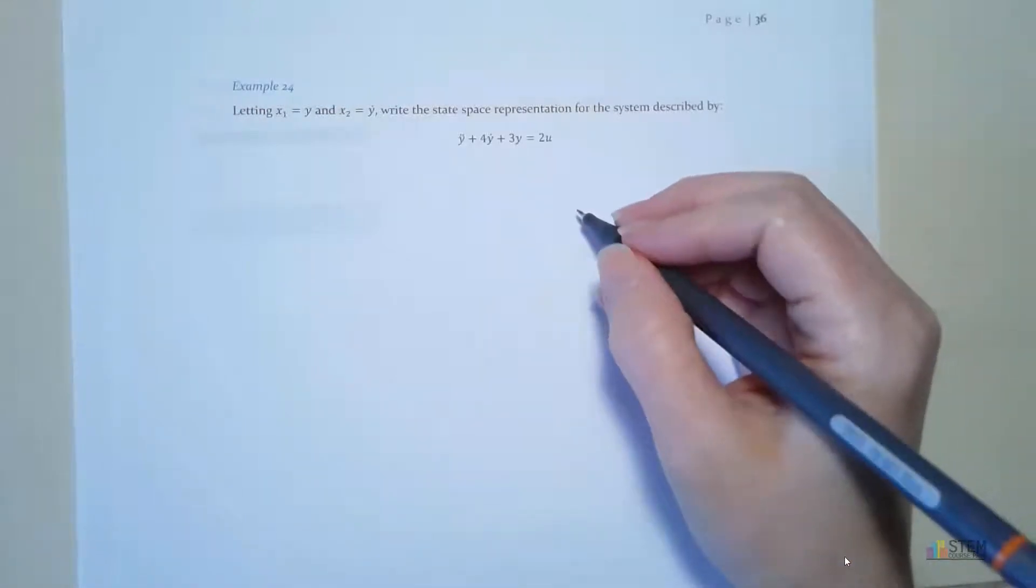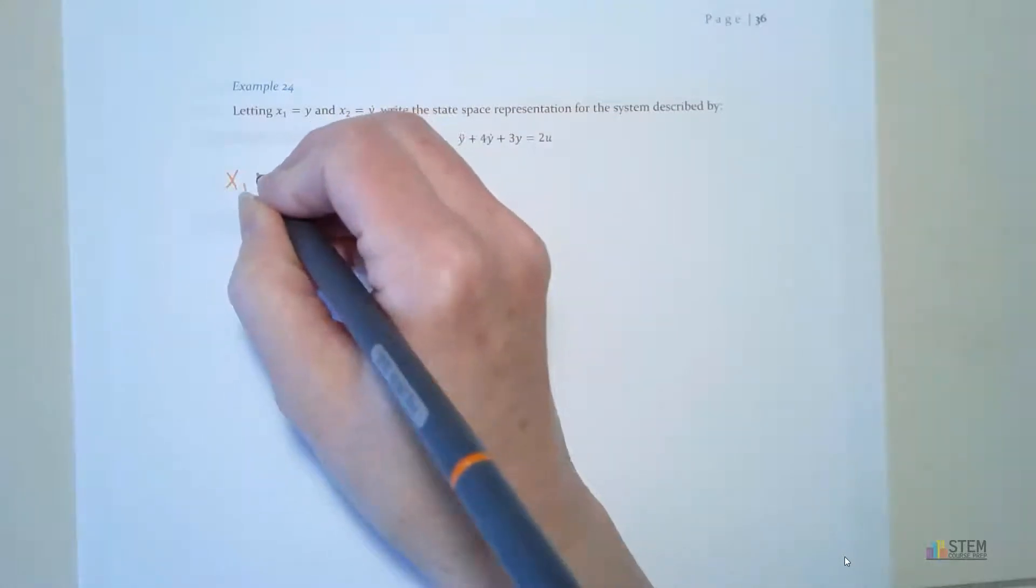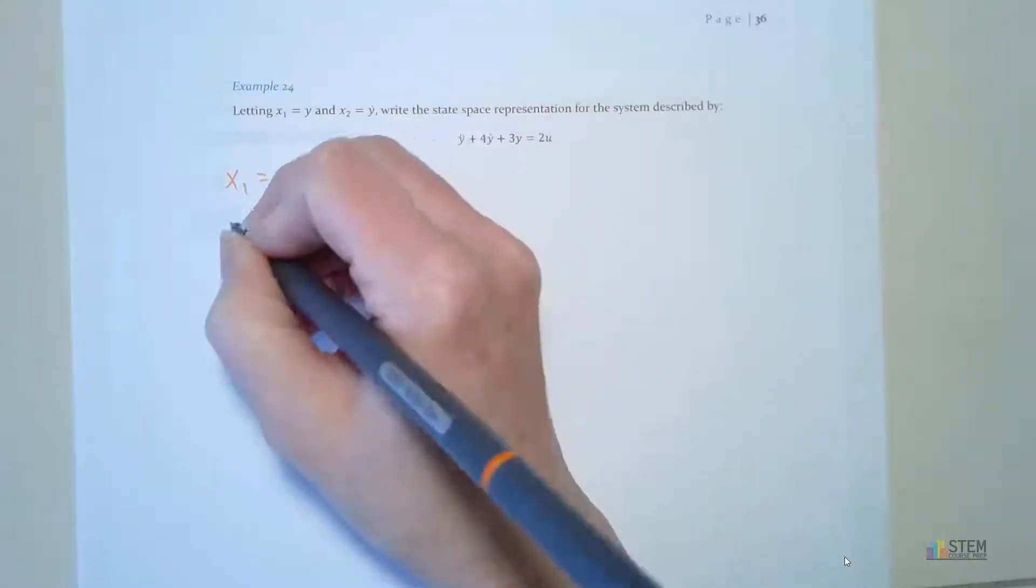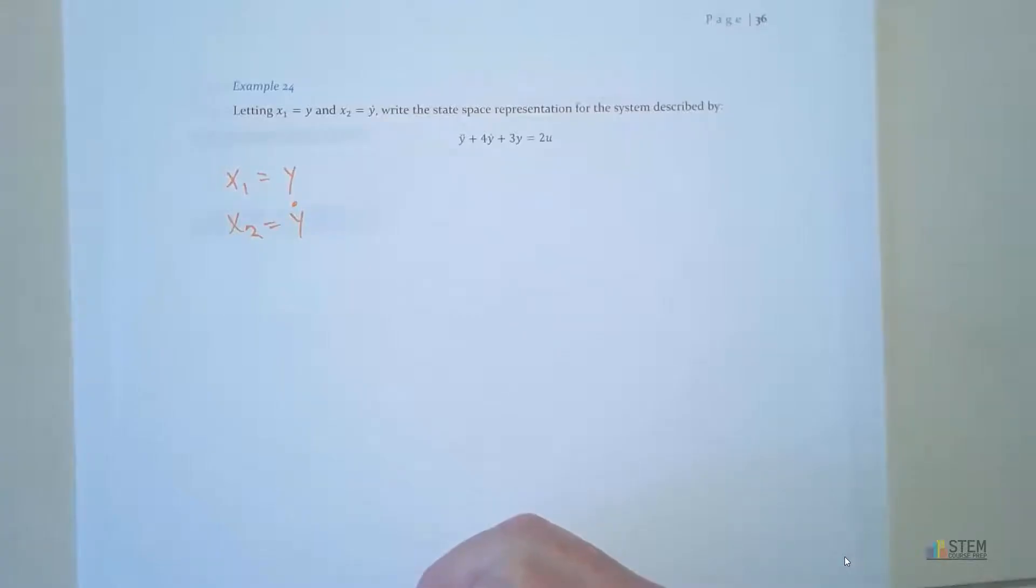Now let's go ahead. We're going to write out the state vector. So that's kind of already given. We know x1 is y and x2 is y dot.